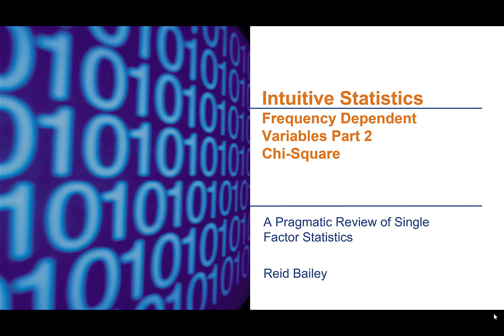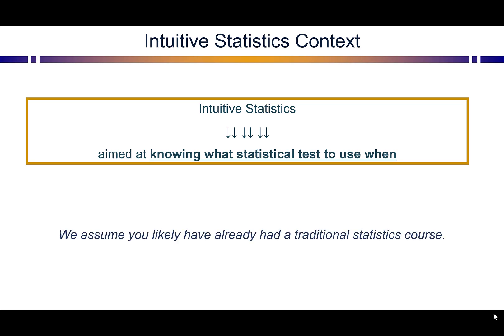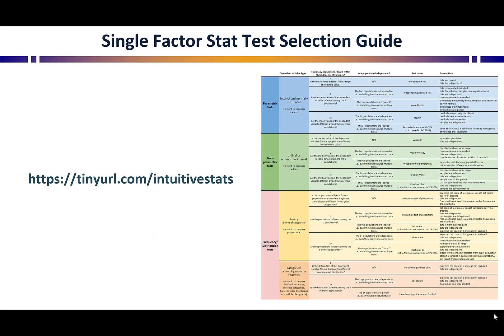Hey, I'm Reed Bailey. Thanks for joining us for our second video in the intuitive statistics series on frequency dependent variables. This one is focused on chi-square. These videos assume you have some basic knowledge of statistical tests and you're really trying to learn about when to use them and what their results mean. You can go to the URL shown here to see a complete guide for single factor hypothesis tests and when to use them. Today we're looking at frequency and distribution tests, in particular the chi-square test.